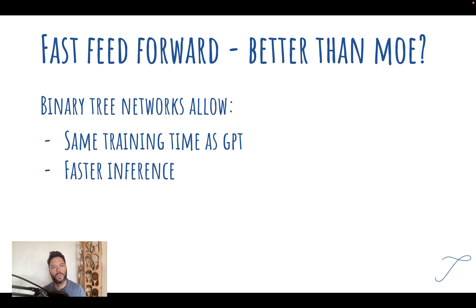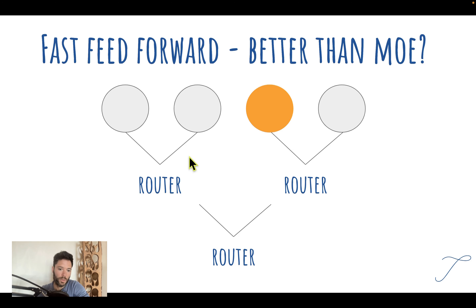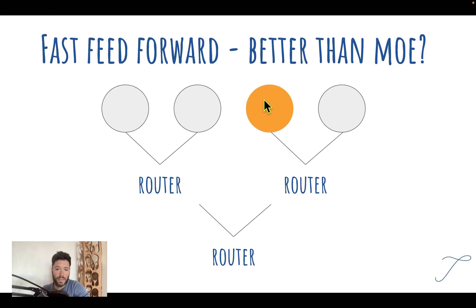With the binary tree approach, the experts end up more balanced without needing to add noise or force the network toward a certain configuration — which is one of the core challenges in mixture of experts. You can get to a similar training time as a standard GPT but with faster inference. During training you feed forward with probabilities and backpropagate losses, but at inference time you just make one choice. The router says probability 0.9 to the right — since that's larger than 0.1, we go right. So you only run inference on one leaf of the entire model rather than all possible neurons.